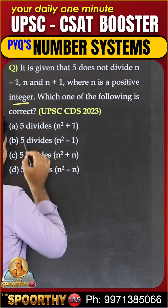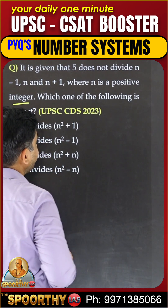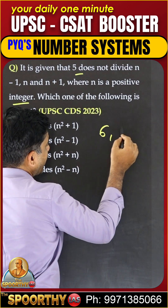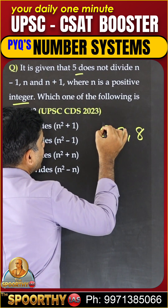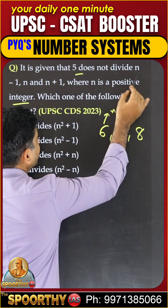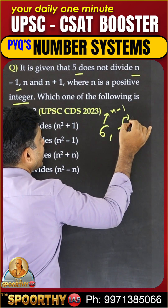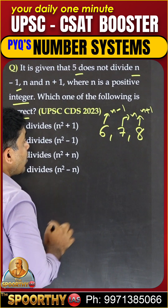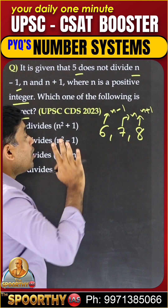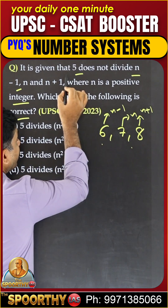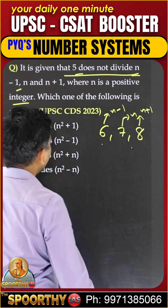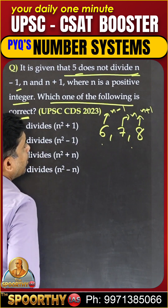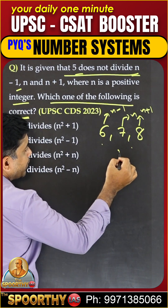Which one of the following is correct? After 5, the numbers are 6, 7, 8. So 6 is n minus 1, 7 is n, and 8 is n plus 1 — three consecutive numbers not divided by 5. These three numbers satisfy this condition. n value is 7 here. Go with options, that is all.